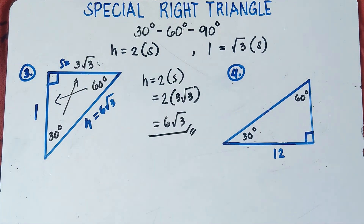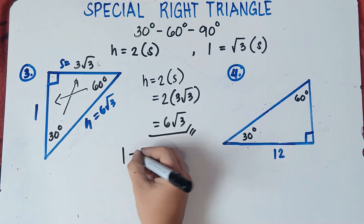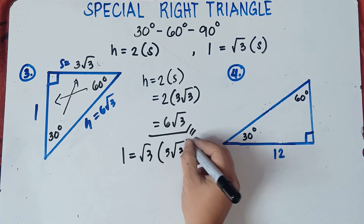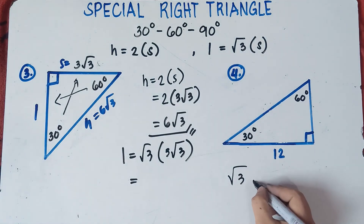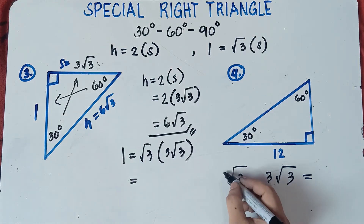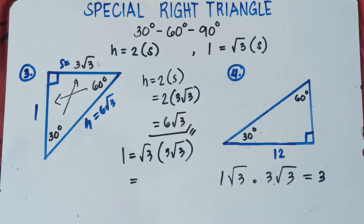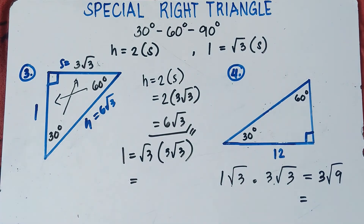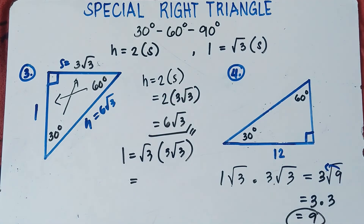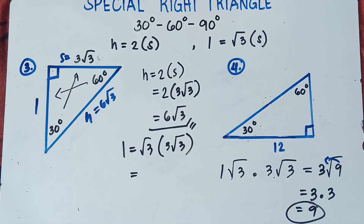For the longer leg, use the formula: longer leg = √3 × shorter leg = √3 × 3√3. Multiply the numbers outside the radical: 1 × 3 = 3; multiply √3 × √3 = √9. Since √9 = 3, we get 3 × 3 = 9. Therefore the longer leg is 9.